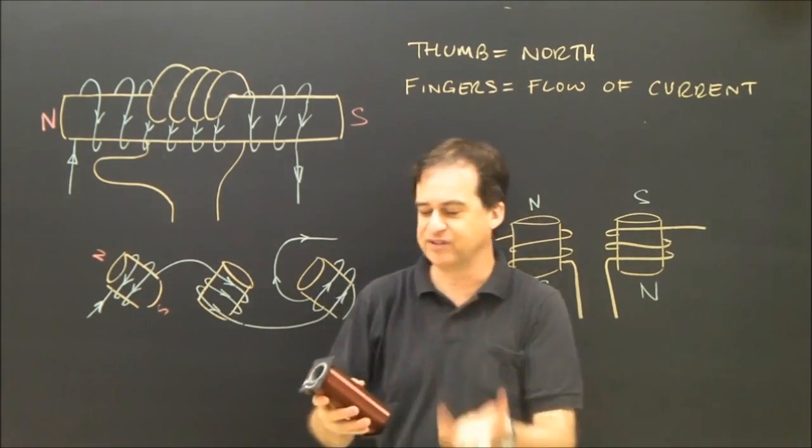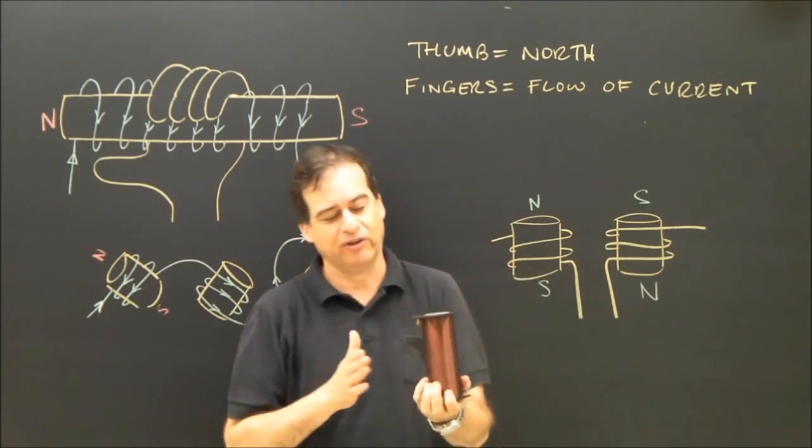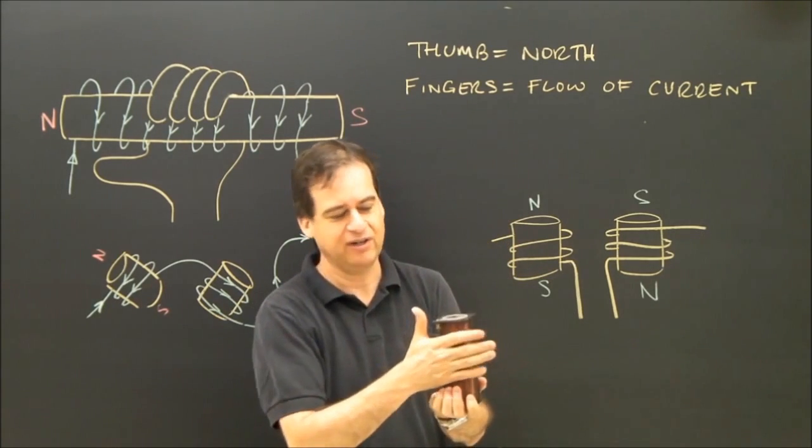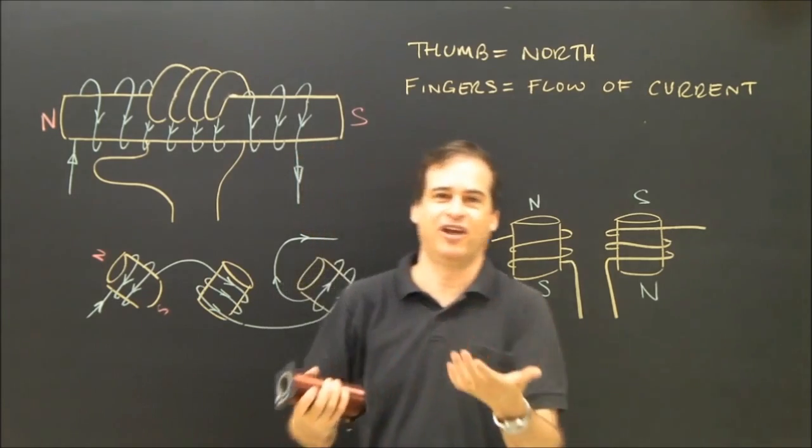If you're using the right hand rule, it's very simple. Which way is the electricity flowing? Well, if the electricity is flowing this way, or the current is flowing this way, then this must be north. You just use the other hand, so it's no big deal.